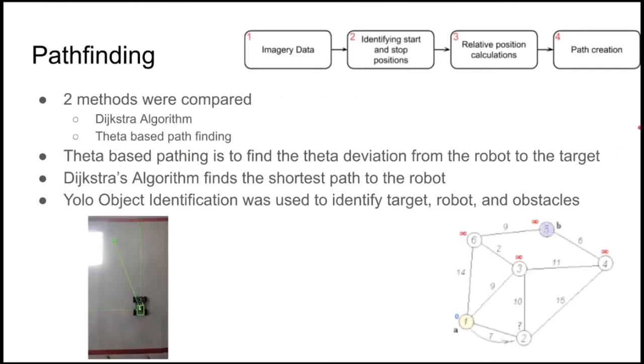The first algorithm we'll be looking at is the pathfinding algorithm and within this we compared two different methods. One is the Dijkstra algorithm which just finds the shortest path between two obstacles or two objects using nodes and another one is theta-based pathfinding. The Dijkstra algorithm, we just put the objects as the nodes and using the objects we would then create a path for which the robot can take to get to the specified target.